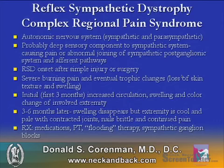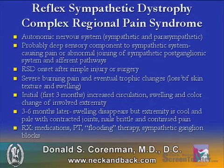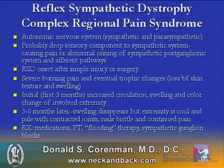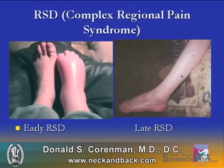Complex regional pain syndrome, CRPS, used to be called reflex sympathetic dystrophy. It involves the autonomic nervous system, and there is probably a deep sensory component to the sympathetic system causing pain through post-ganglionic afferent pathways. RSD onset is very commonly after a simple injury or surgery. There is severe burning pain and eventually trophic changes of the skin, such as loss of skin texture and swelling. There are two essential stages: the initial stage with increased circulation, swelling, and color change, and then three to six months later, swelling disappears but the extremity is cool and pale with contracted joints, brittle nails, and continuing pain. Pictures of early and late RSD are shown here.